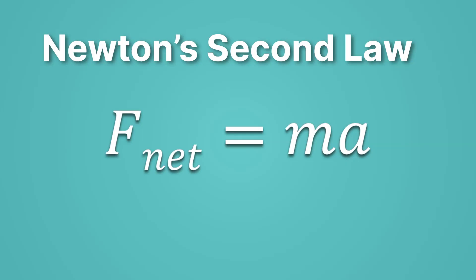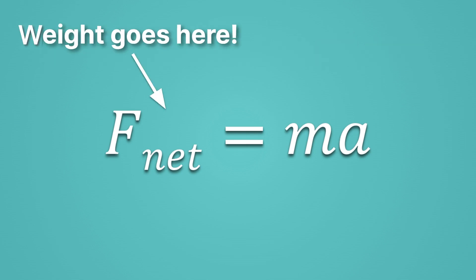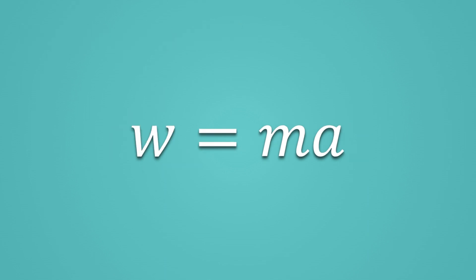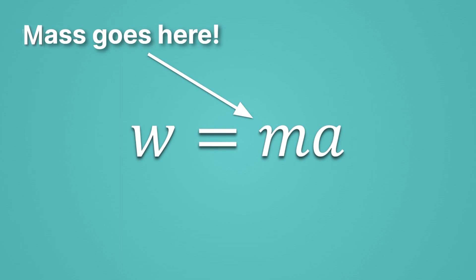Let's think about weight and mass in light of Newton's second law. Newton's second law tells us that net force equals mass times acceleration. Weight is a force, so it goes on the force side — we replace the force with W. Weight is equal to mass times acceleration, with mass on the M side. You can see how different weight and mass are.